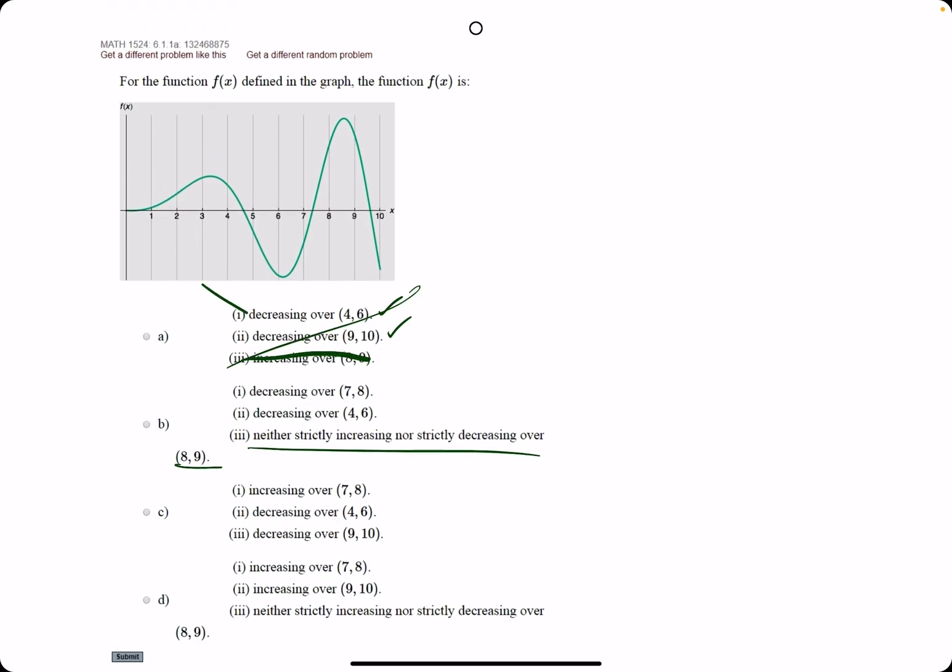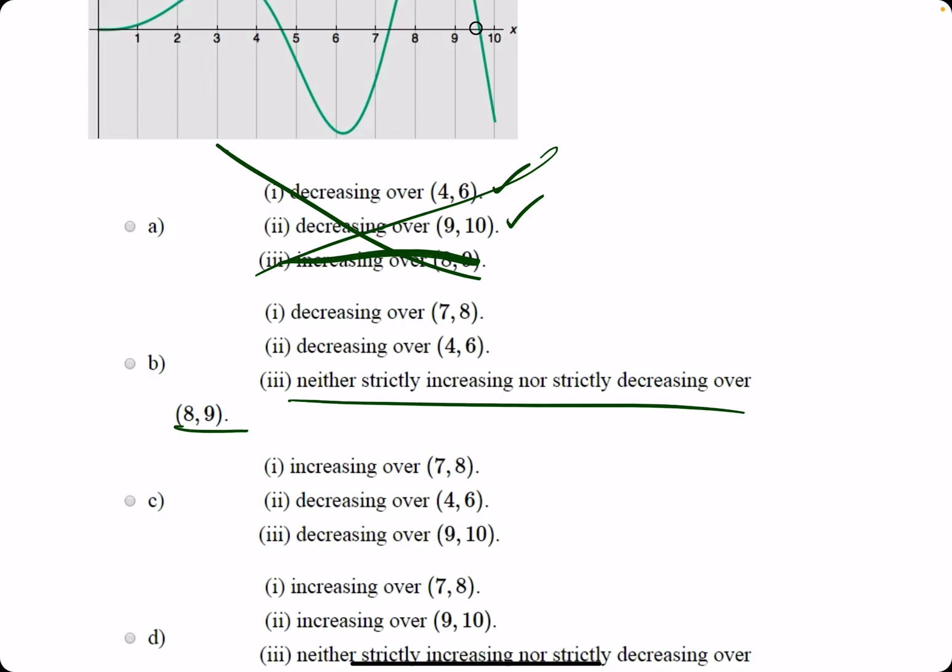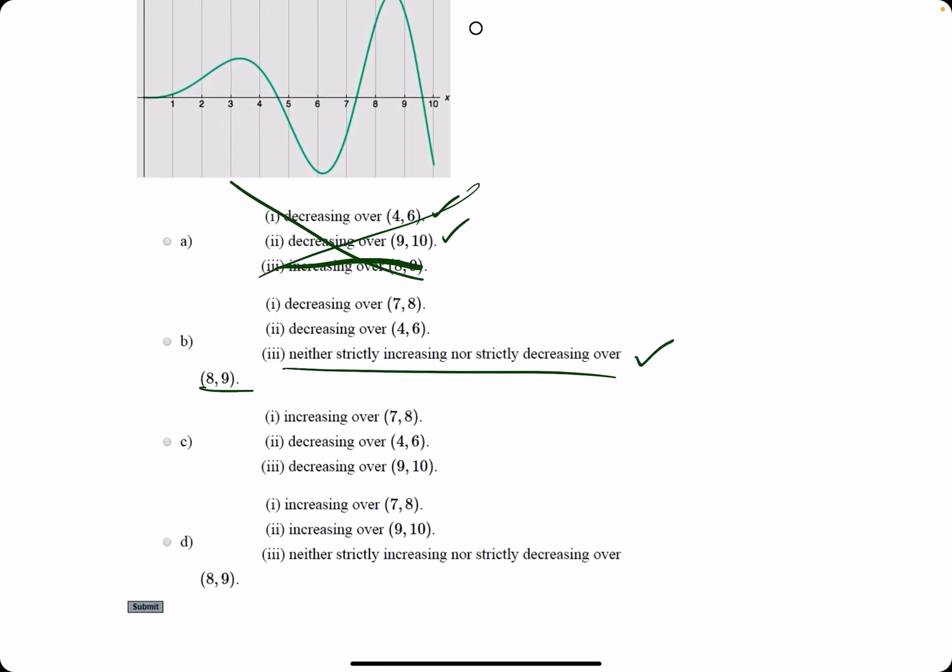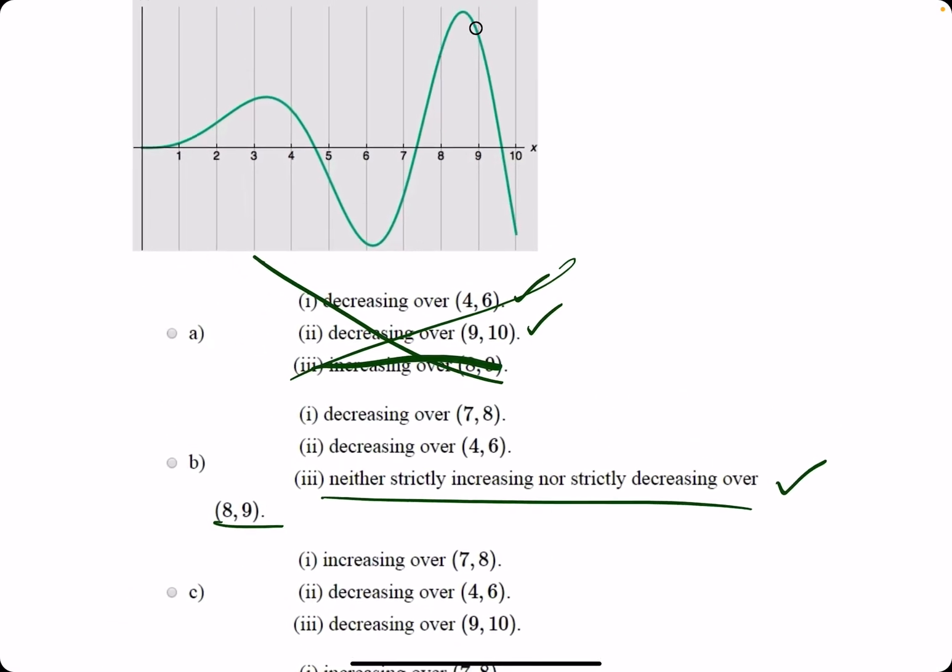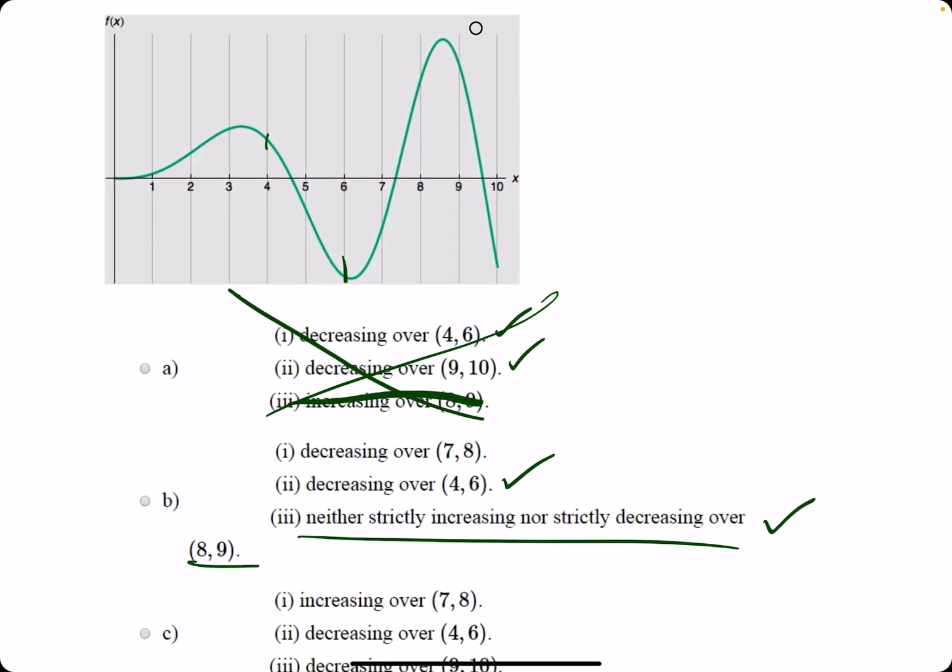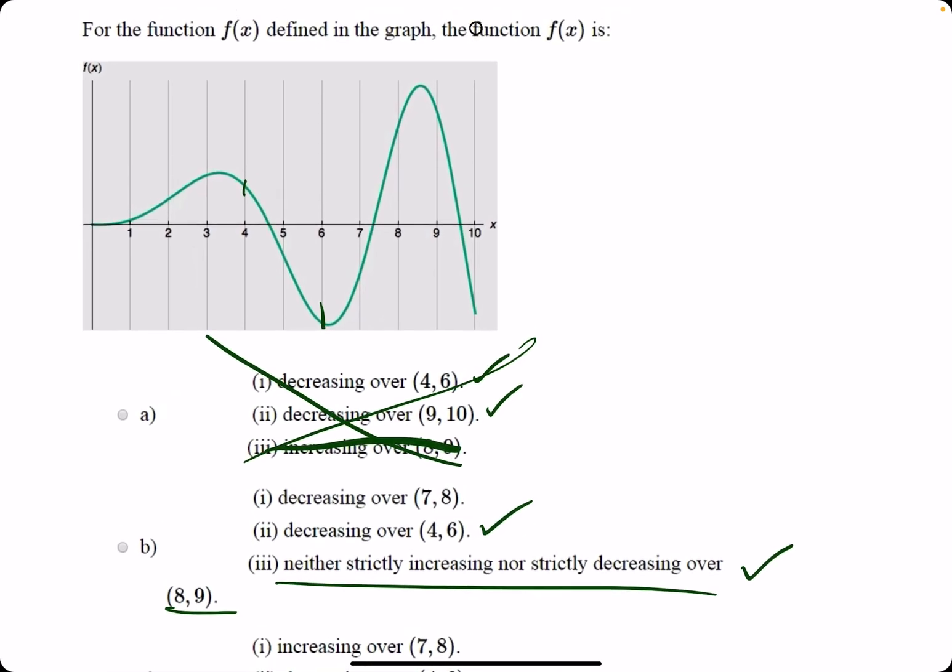Let's go ahead and check the others. On option b, number 3 is true because of what we just said. Let's work our way up. Decreasing over (4, 6)—we actually said that was true from the first one, so we'll keep that true. And then decreasing (7, 8)—it's just the opposite. It actually looks like it's increasing from 7 to 8.